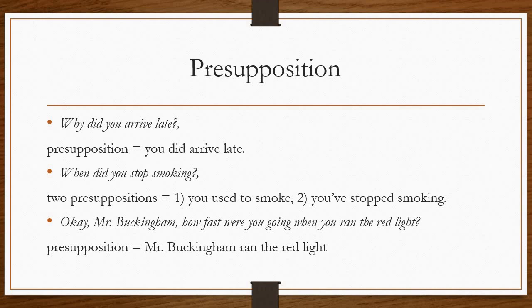The next example: 'When did you stop smoking?' Now there are two presuppositions in this sentence. Number one: you used to smoke previously. Number two: you have stopped smoking. I don't first ask 'Did you used to smoke?' then 'Have you stopped smoking?' and then ask 'When did you stop smoking?' — this never happens. I directly ask the question, and two presuppositions are already present within it.